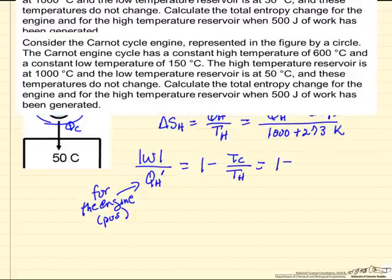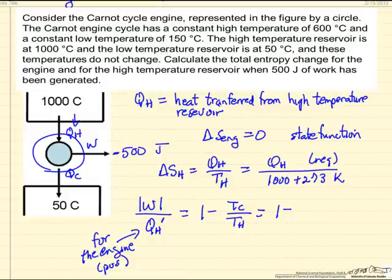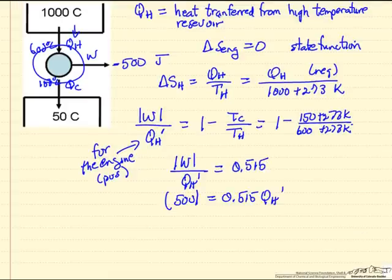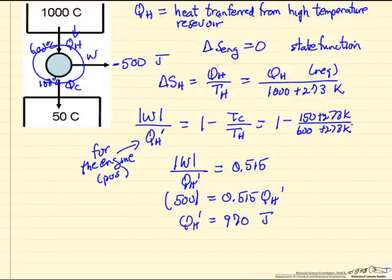Using absolute temperatures, the low temperature is 150C and the high temperature is 600 degrees C, so the work over QH prime equals 0.515. The work is 500 absolute value in the calculation, so 500 equals 0.515 times QH prime, which means QH prime is 970 joules.